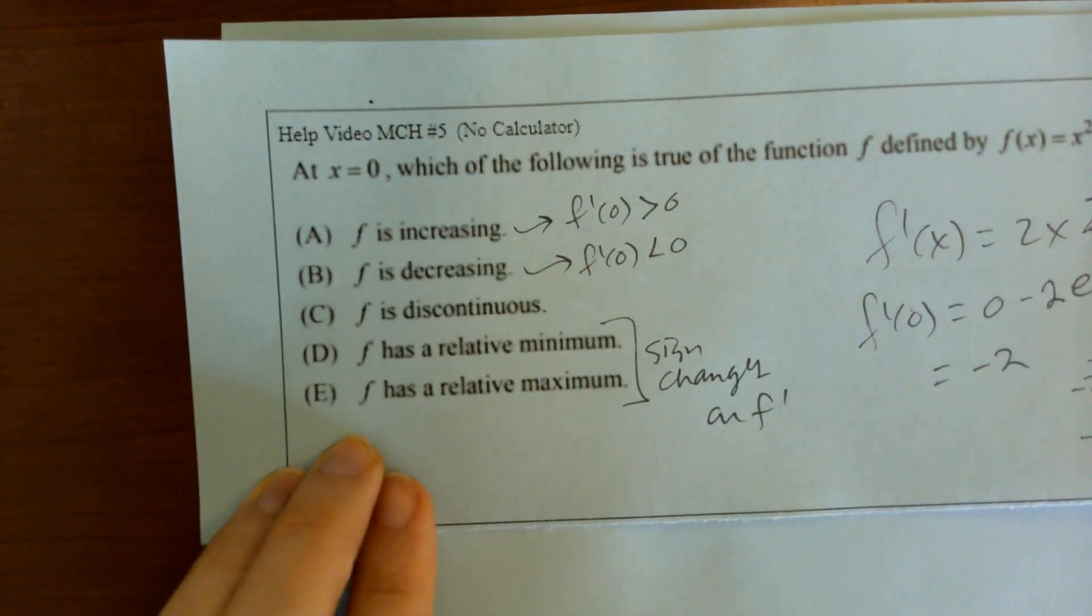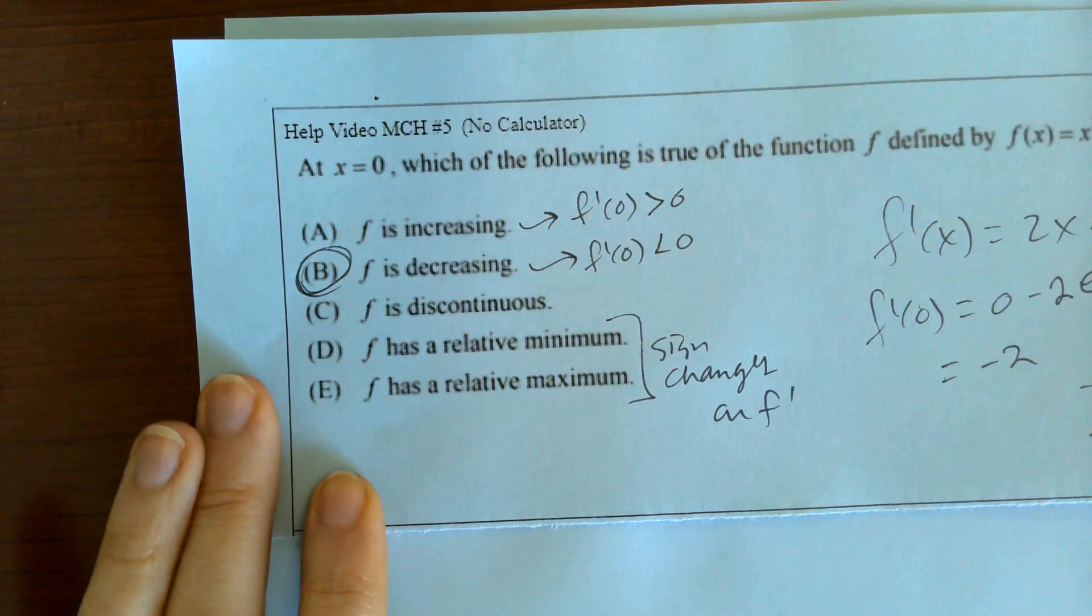So since this is negative, since the derivative is negative, we know it is decreasing.